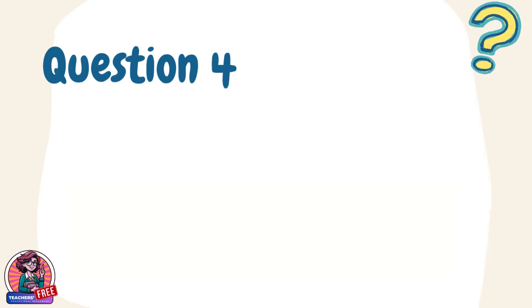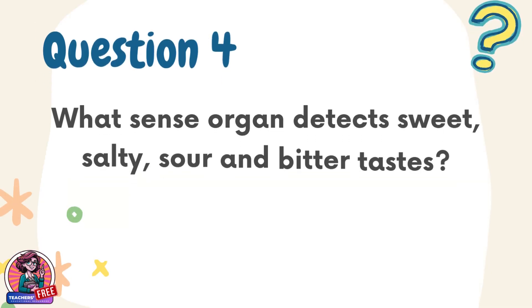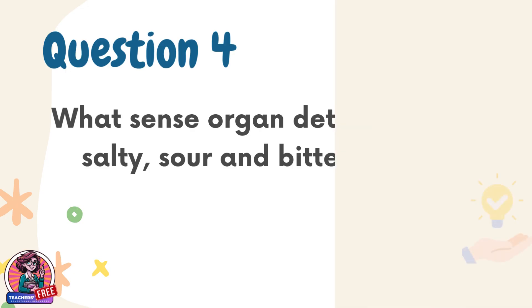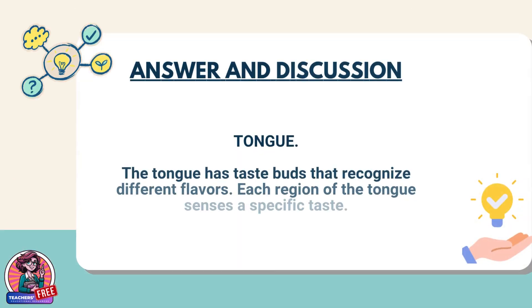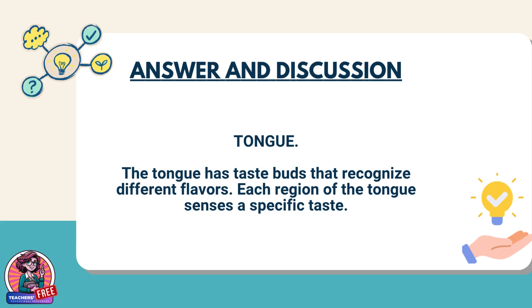Question 4. What sense organ detects sweet, salty, sour, and bitter tastes? Answer: Tongue. The tongue has taste buds that recognize different flavors. Each region of the tongue senses a specific taste.